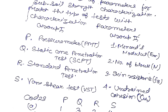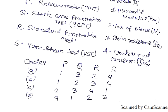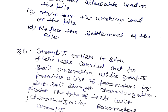In group 2, first is Menard modulus, second is number of blows, third is skin resistance, fourth is undrained cohesion. These are the codes given for question number 5.